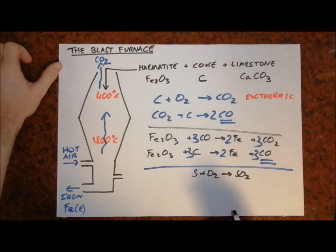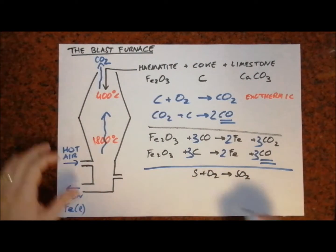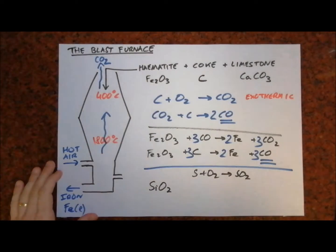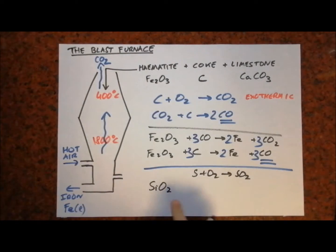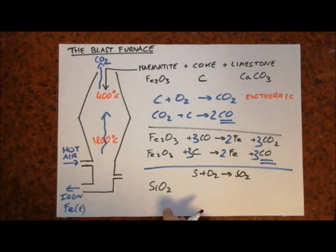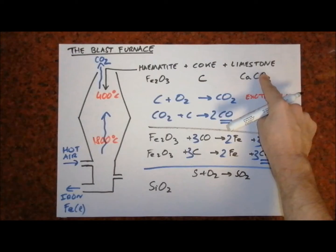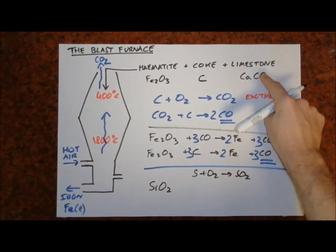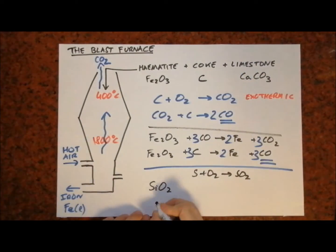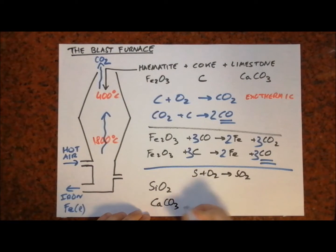The main impurity in hematite, however, is silicon dioxide — also known as sand or quartz, of which there is plenty here in Qatar. If the silicon dioxide is not removed, the iron will be too brittle for use. That is why the limestone is added.